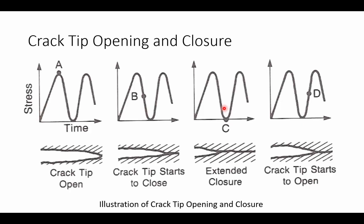This is a sequence that shows different parts of a stress-time plot for cycles and how the crack tip corresponds under those different loads. At the peak, point A, we see that our crack tip is fully open and it has extended during that loading process. As we begin to unload, we'll see that our crack tip actually starts to close, and it starts to close well before the minimal value. Once we get to the minimal value, we have extended closure of the crack. And when we start to load back up from C to D, it actually takes time before the crack starts to open, and it can actually start to open here before we start to have further extension of our crack.